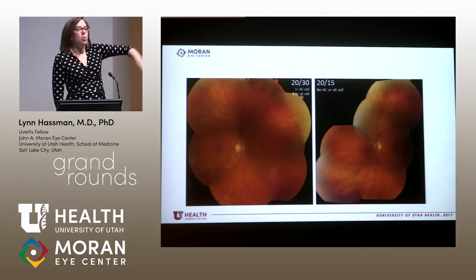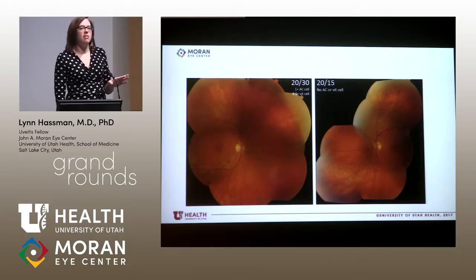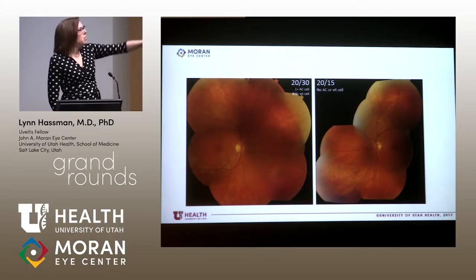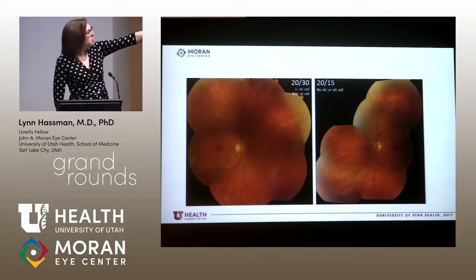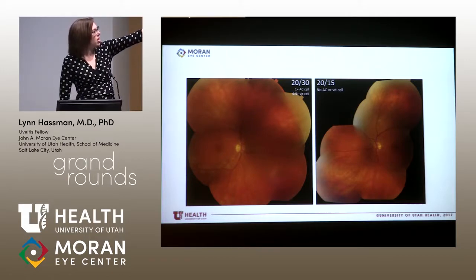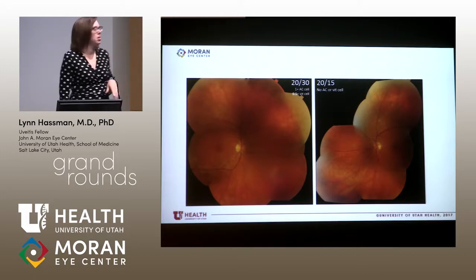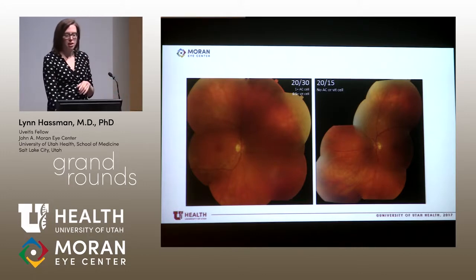The left eye vision is 20/15. There's not really any AC or vitreous cell, but she has a few similar lesions looking superiorly from the optic nerve into the superior periphery.